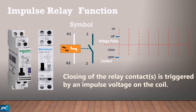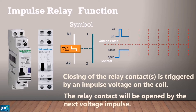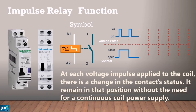Regarding impulse relay function: closing of the relay contacts is triggered by an impulse voltage on the coil. The closed relay contact will then be opened on the next voltage impulse. At each impulse voltage applied on the coil, there is a change in contact status, and it remains in that position without the need for a continuous coil power supply.